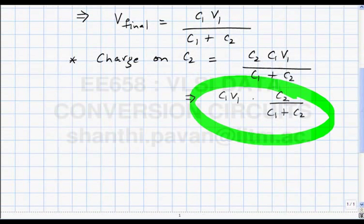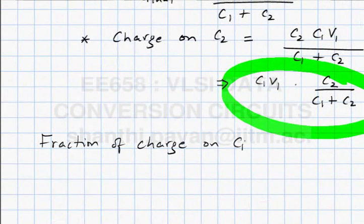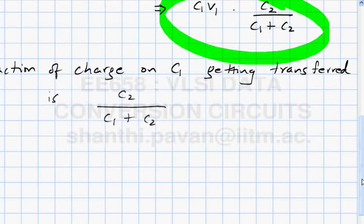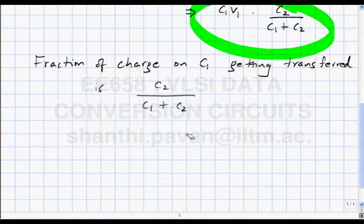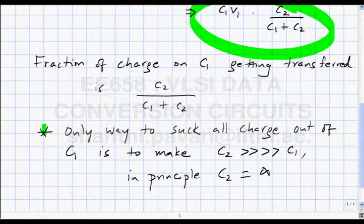We wanted to get the entire charge transferred, but only a fraction C2/(C1+C2) is getting transferred onto C2. To suck out the entire amount of charge from C1, you would need to make C2 much, much larger than C1. In principle, you can only suck out all the charge from C1 onto C2 if C2 is infinite.